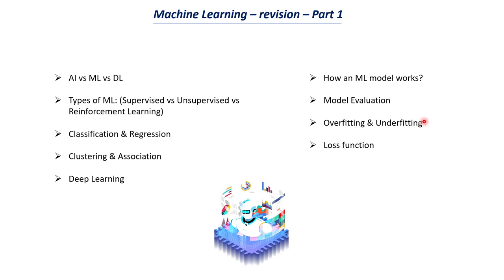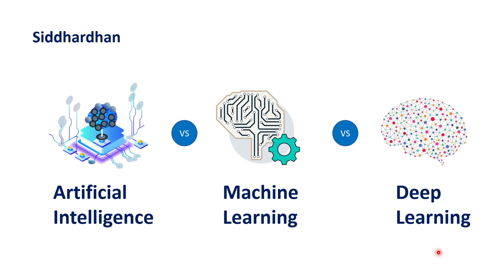These are all the topics we will discuss in this first part. In the next part of this machine learning revision we will discuss gradient descent, the intuition of different models, and so on. Let's get started with our first topic: the difference between artificial intelligence, machine learning, and deep learning.